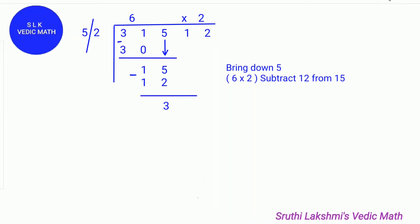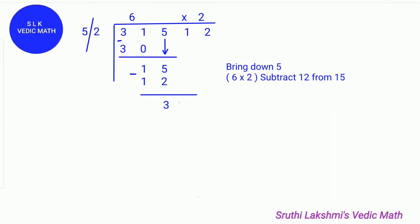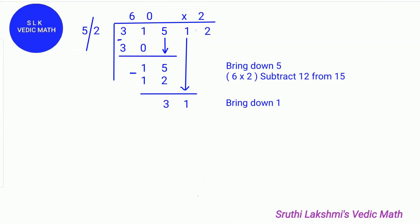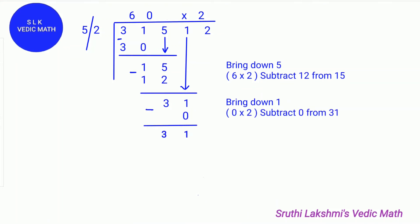Next do the last digit of the quotient times the last digit of the divisor: 6 times 2 is 12. So we do 15 minus 12, which gives us 3. Three is not divisible by 5, so we write down a 0 and bring down the 1.